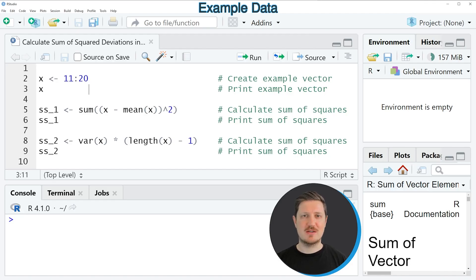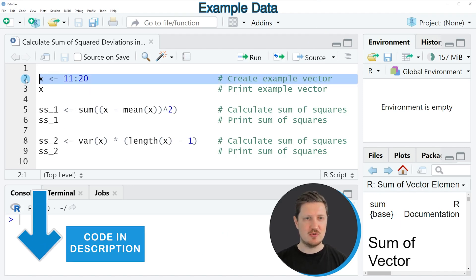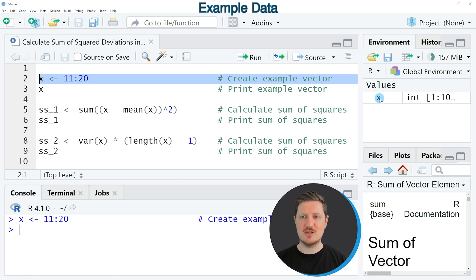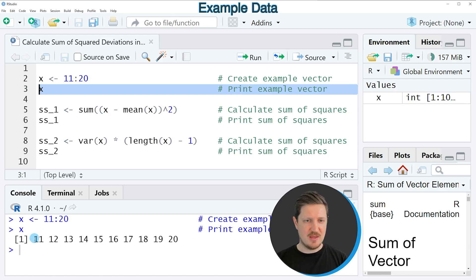In this video I will show you two examples and both of these examples are based on the vector object that we can create with line 2 of the code. So if you run this line of code, you can see at the top right of RStudio that a new data object is appearing, which is called X. And we can print this data object to the RStudio console by running line 3 of the code. And then you can see that we have created a vector containing numeric values ranging from 11 to 20.